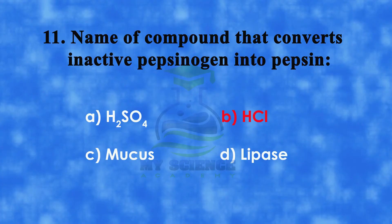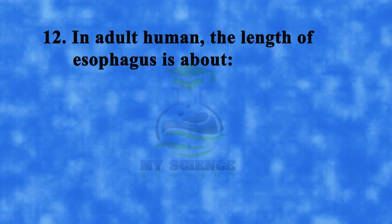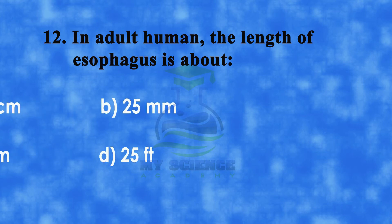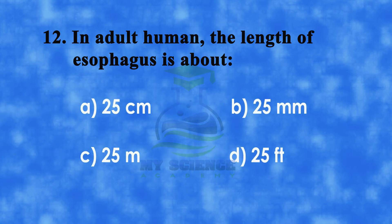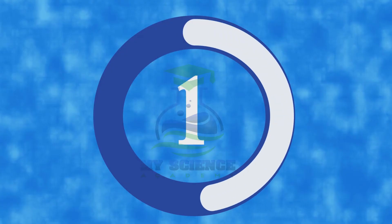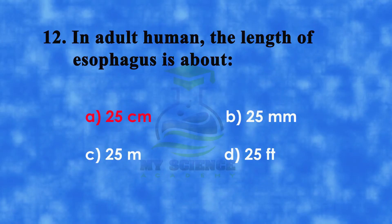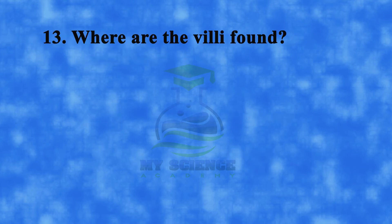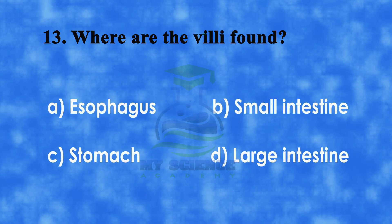The correct answer is b) HCl. Question number twelve: in an adult human, the length of the esophagus is about — a) 25 centimeters, b) 25 millimeters, c) 25 meters, or d) 25 feet. The correct answer is a) 25 centimeters. Question number thirteen: where are the villi found? — a) esophagus, b) small intestine, c) stomach, or d) large intestine.